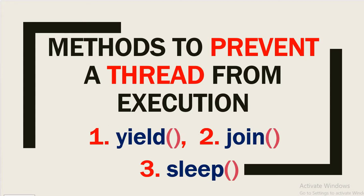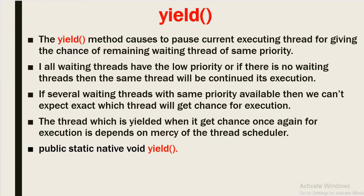Hello friends, welcome back to this channel. In our previous video we learned how to create a thread by multiple ways. Today we are going to learn which methods we can use to prevent a thread from execution. We can prevent or stop thread execution by using the following methods: yield method, join method, and sleep method.